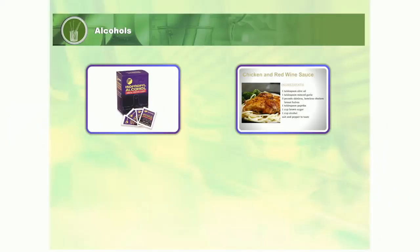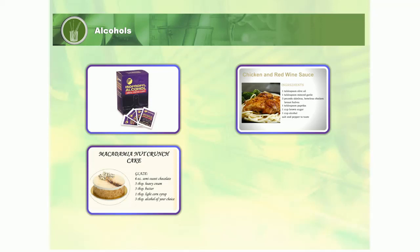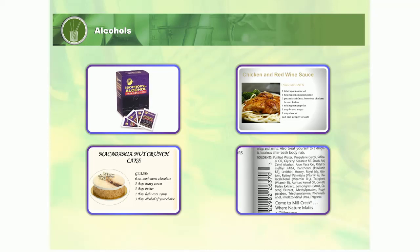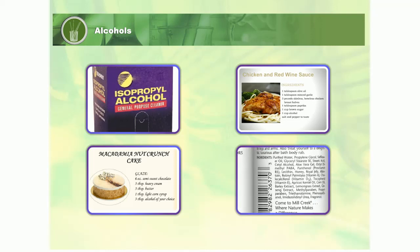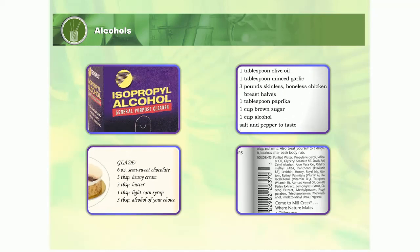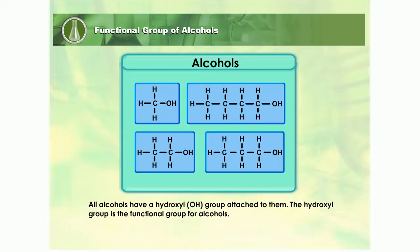Look at these wide range of products. They also contain alcohol as one of the ingredients, and for each product, alcohol serves different purposes. In chemistry, what is the meaning of alcohol? All alcohols have a hydroxyl or OH group attached to them. The hydroxyl group is the functional group for alcohols.